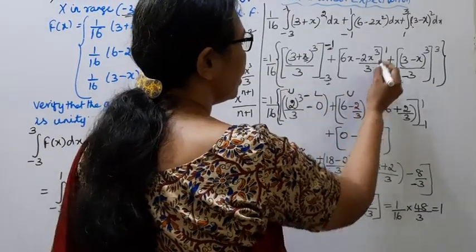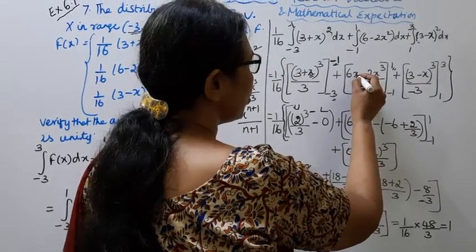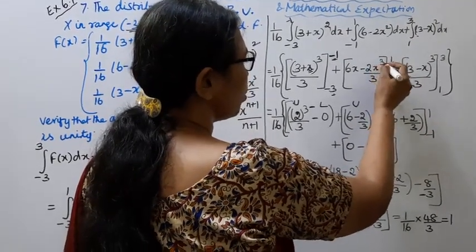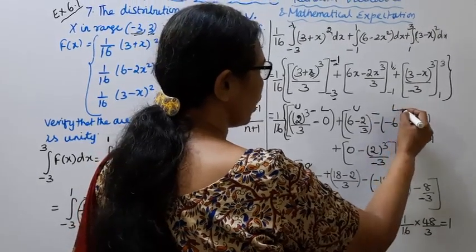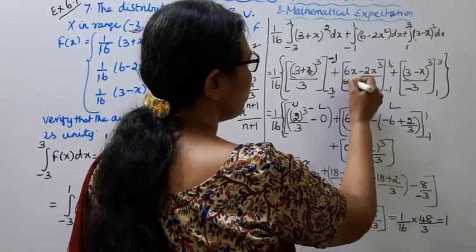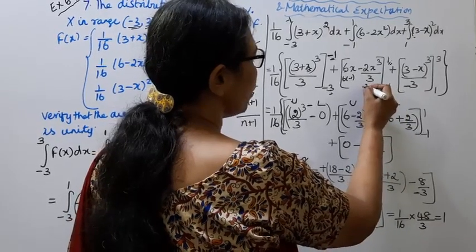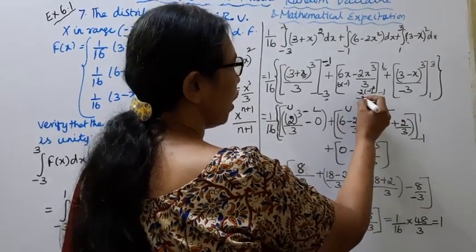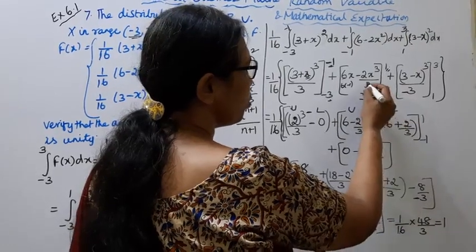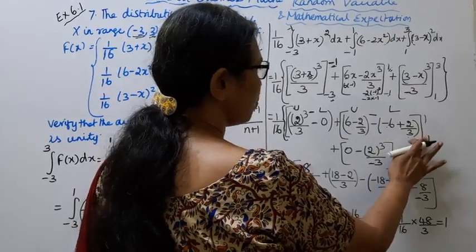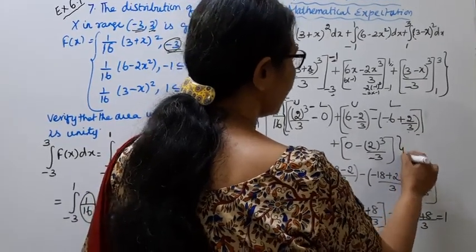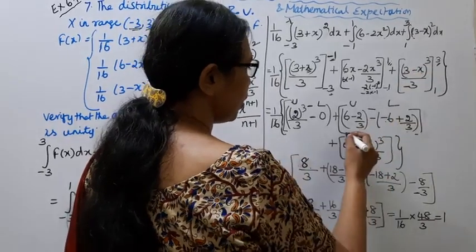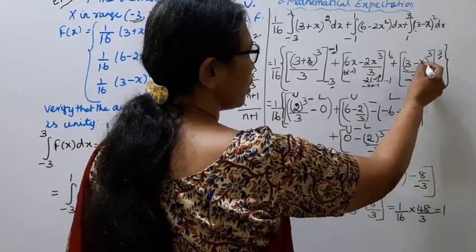For the second integral, upper limit x = 1: (6 - 2×1)³ / (−6) = (4)³ / (−6). Lower limit x = -1: (6 - 2×(-1))³ / (−6) = (8)³ / (−6). For the third integral, upper limit x = 3: (3 - 3)³ / (−3) = 0. Lower limit x = 1: (3 - 1)³ / (−3) = 8 / (−3).